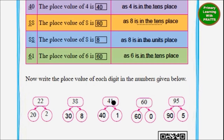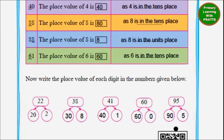So how will we split these numbers? 22 is 20 and 2. 38 is 30 and 8. 41 is 40 and 1. 60 is 60 and 0. 95 is 90 and 5. And again, this is how we remember place and place value: place is simply whether the number is under hundreds, tens, or units; place value means take the number and multiply it by whichever column it is under.